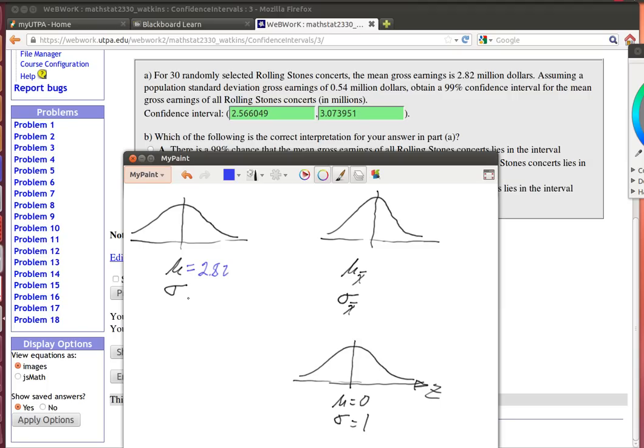And in our case we're saying that we know that the standard deviation of the gross earnings is 0.54. Then if we looked at all possible samples of size N, now in our case the N is 30, that's a fairly large number.